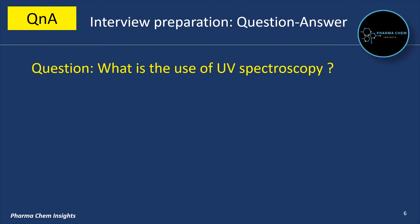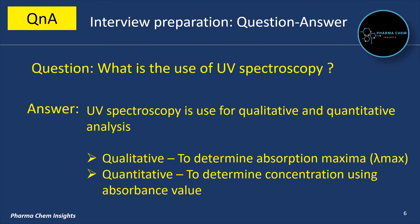What is the use of UV spectroscopy? UV spectroscopy is used for qualitative as well as quantitative analysis. Qualitative: to determine the absorption maxima of a compound, i.e., lambda max. Quantitative: to determine concentration using absorbance value.